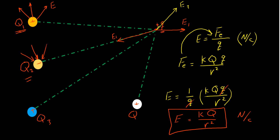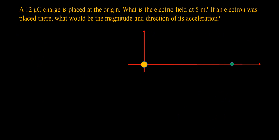Let's now solve an example. A 12 microcoulomb charge is placed at the origin. What is the electric field at 5 meters if an electron is placed there? That's my 5-meter distance with an electron at that position. What would be the magnitude and direction of its acceleration?